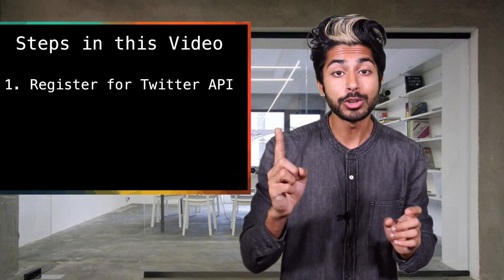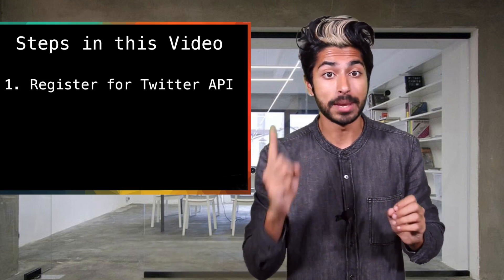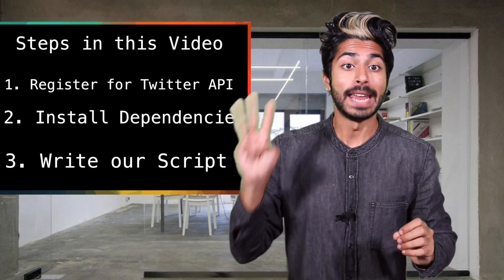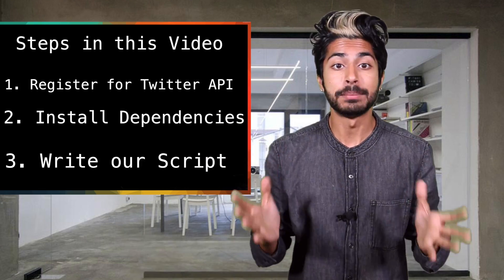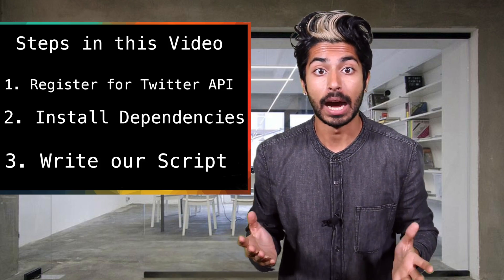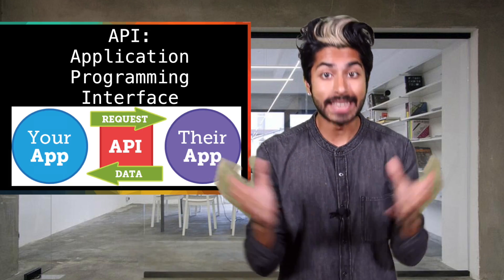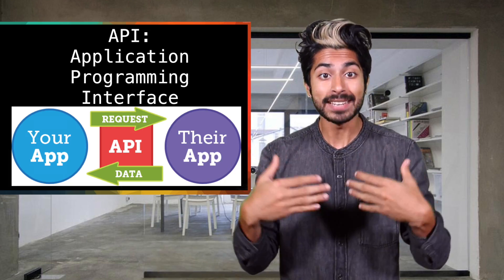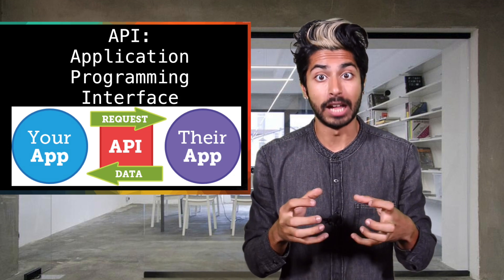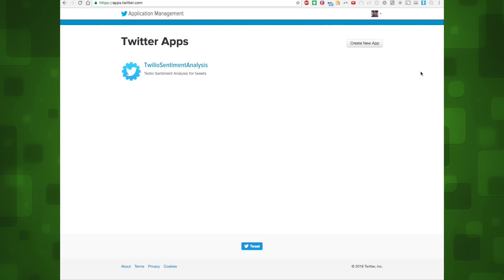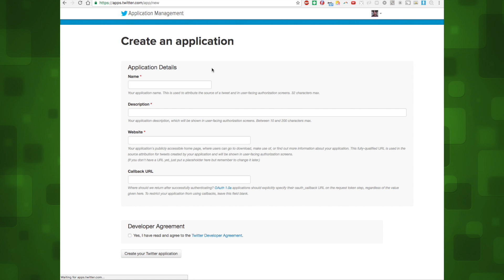Our process will be to register to access Twitter's API, install our dependencies, then write our sentiment analyzer script. Let's start by signing up to use Twitter's API. An API, or application programming interface, is a gateway that lets you access some server's internal functionality — in our case, Twitter. We'll be able to read and write tweets right from our app using Twitter's API.